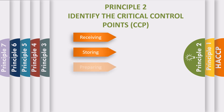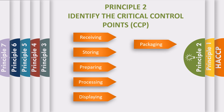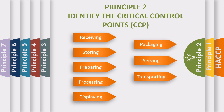Critical points include receiving, storing, preparing, processing, displaying, packaging, serving, transporting, and disposing. Thinking about the chicken from Principle 1 — is the raw chicken at the delivery dock a critical control point? Yes, it is. It is a point where you can take action to control the hazard.